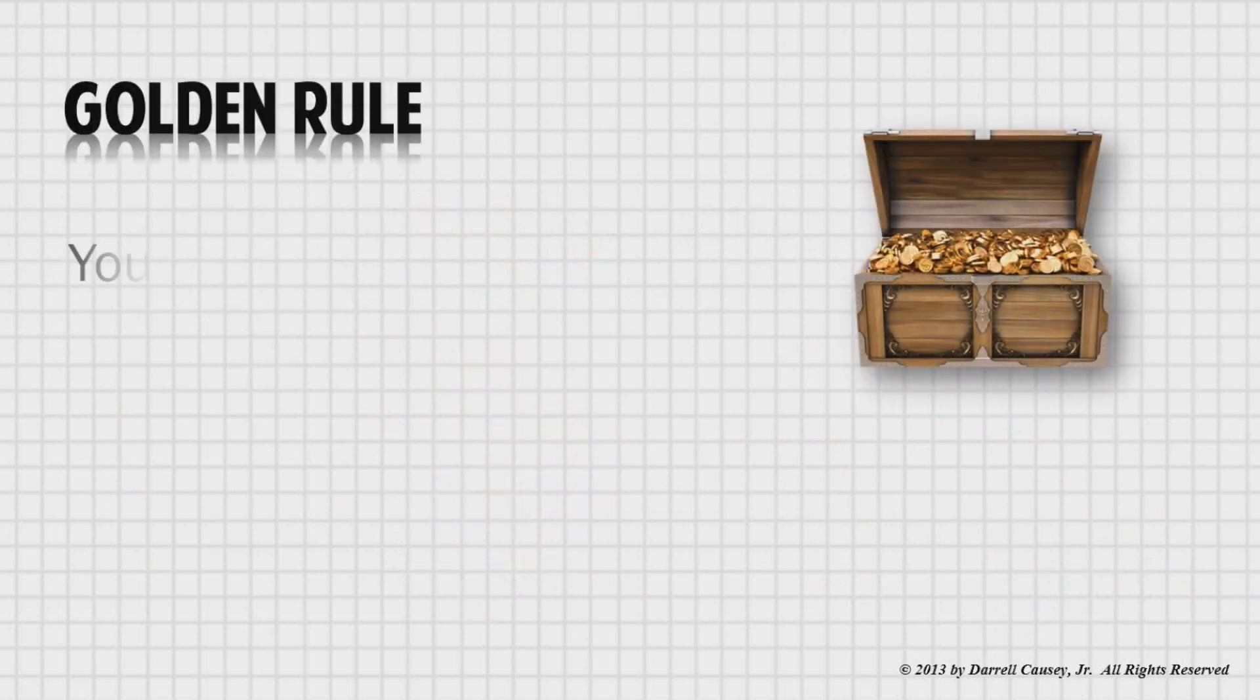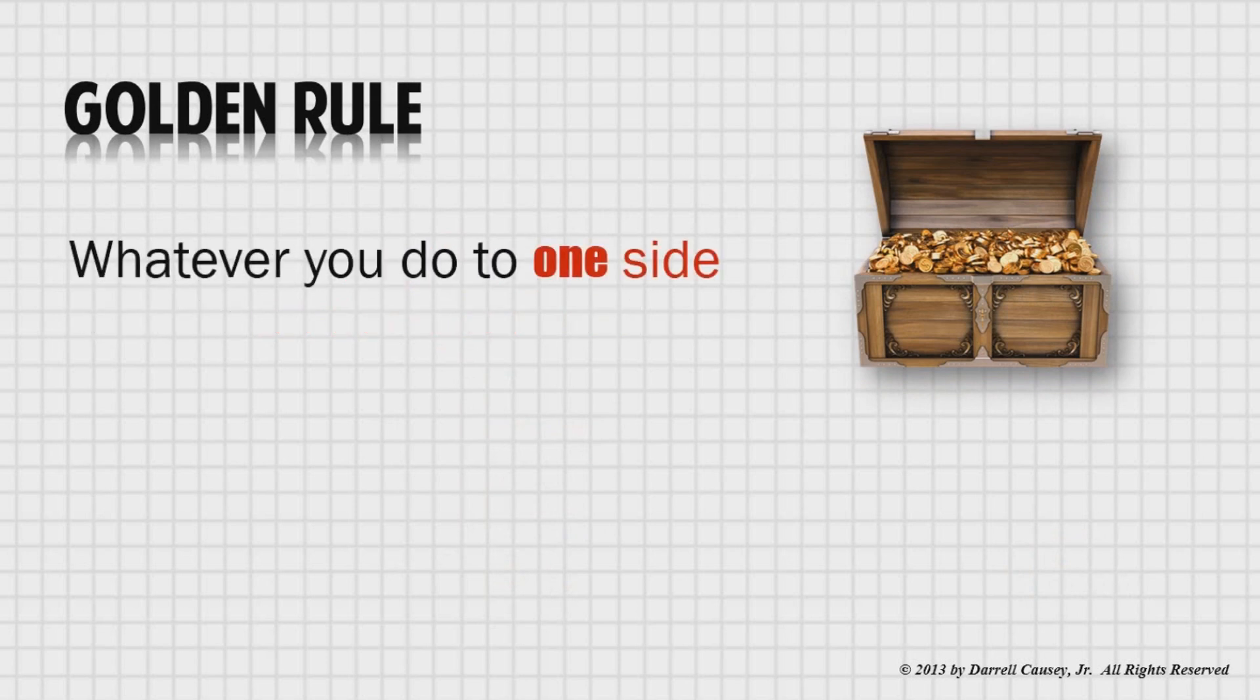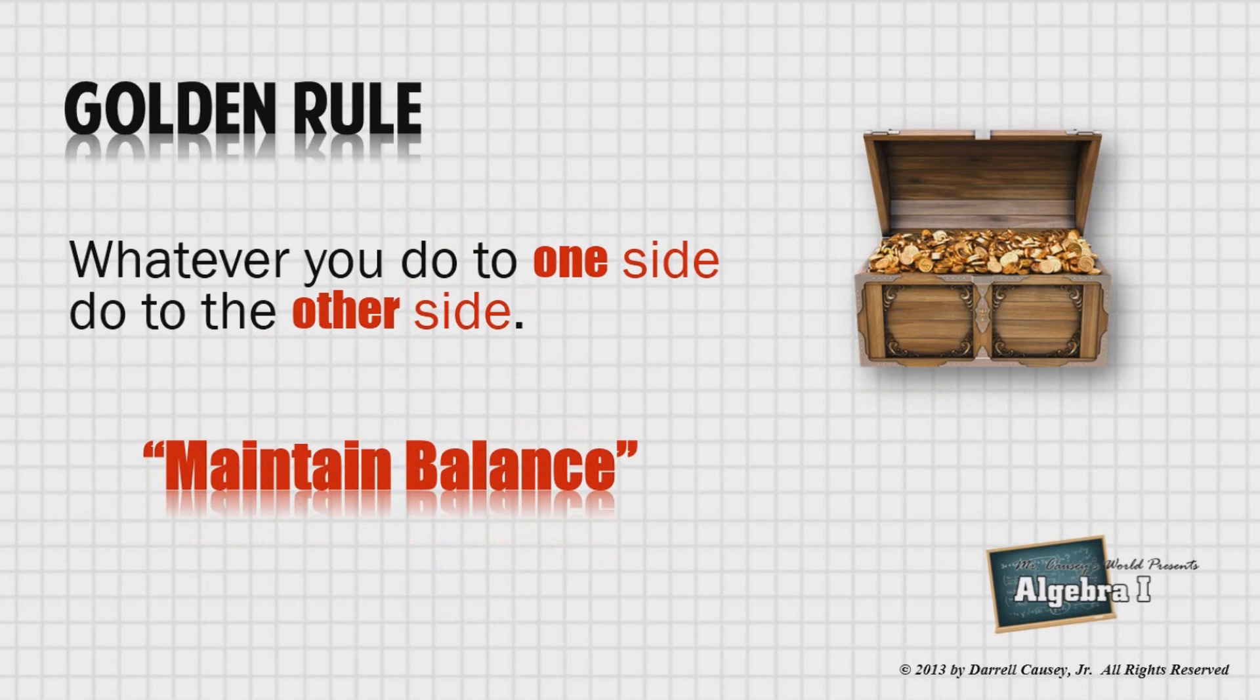And you must know the golden rule. You can do anything you want to an equation. But whatever you do to one side, do to the other. Very important when it comes to understanding or working with algebra. And this is to help maintain balance.